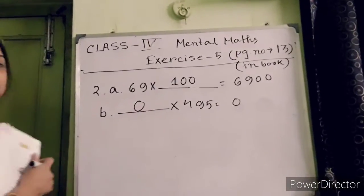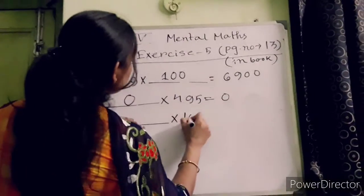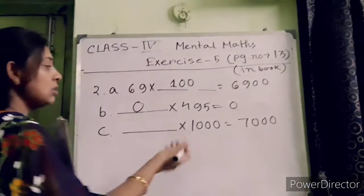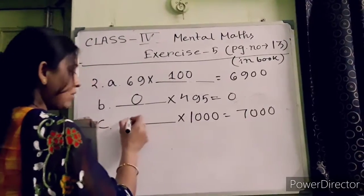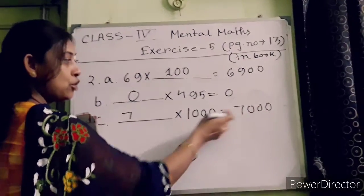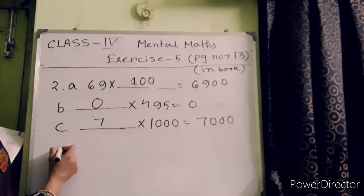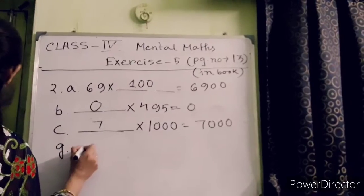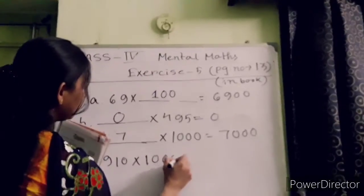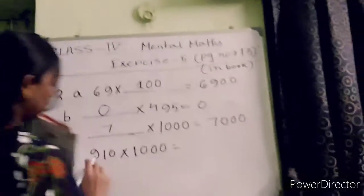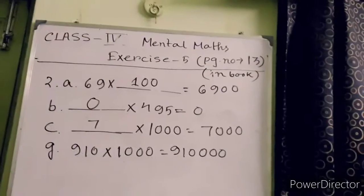C: 7 into 1000. 7000. So 1000 times 7, we also know 1000 times 7 is 1 times 7, and already 3 zeros in your answer. D: 910 multiplied by 1000. So your answer will be 910 into 1 is 910, after 3 zeros, so you need to put 3 zeros: 910000.